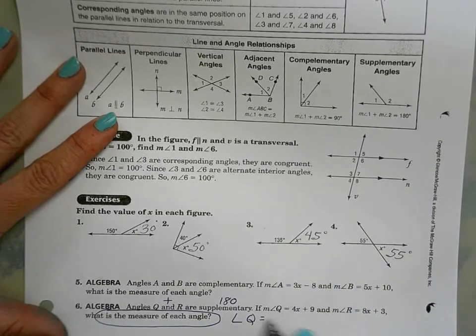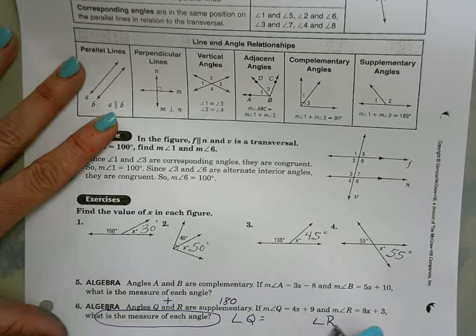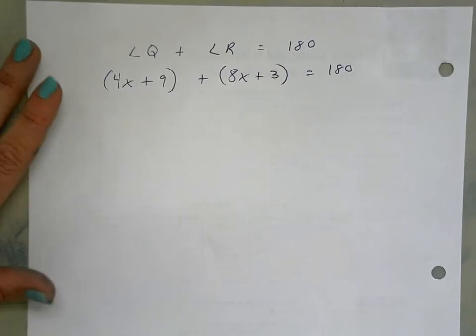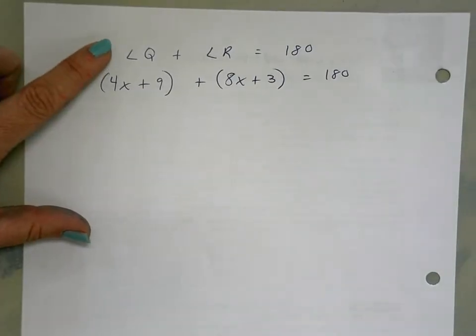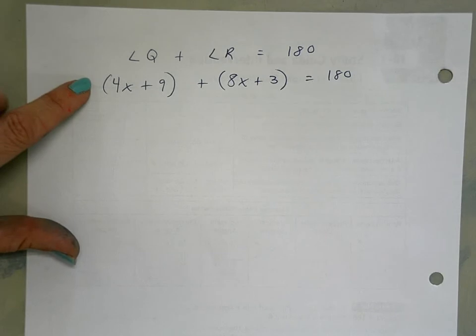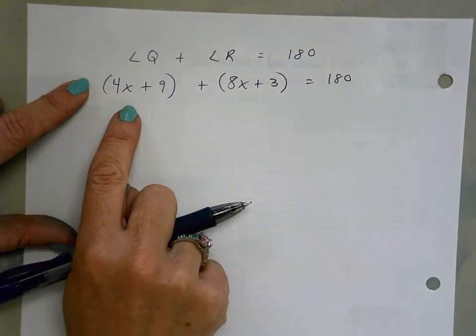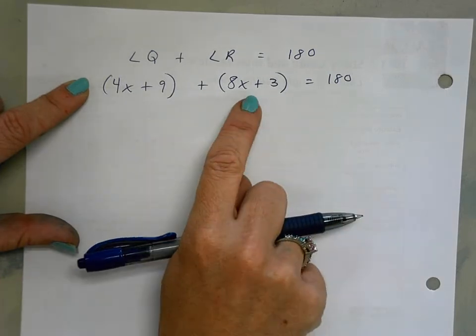Our final answer should be angle Q and angle R, and together their sum should be 180. What do I know? I know that if I add the two angles together I get 180 degrees, and then I substitute. Instead of angle Q, I put in the 4x plus 9. Instead of angle R, I put in the 8x plus 3.